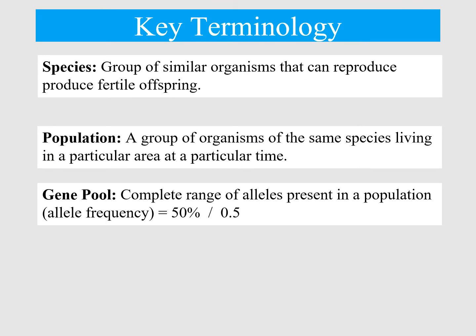So just to introduce the key terminology for this module. The first term is a species — a group of similar organisms that can reproduce to produce fertile offspring. A population is a group of organisms of the same species living in the same area at a particular time. A gene pool is the complete range of alleles present in the population, often called allele frequency, and it can be represented as percentages or decimals.